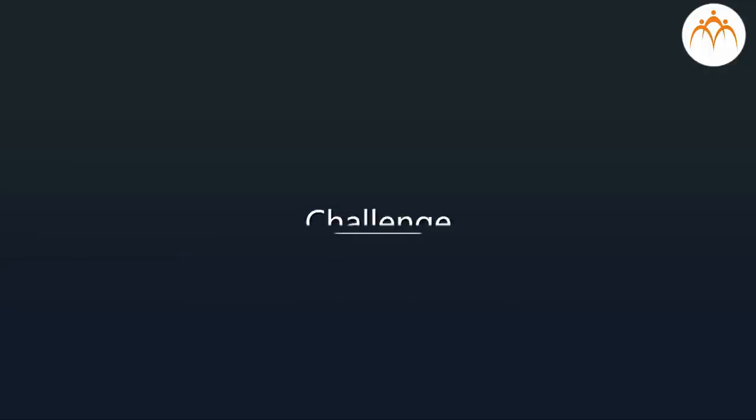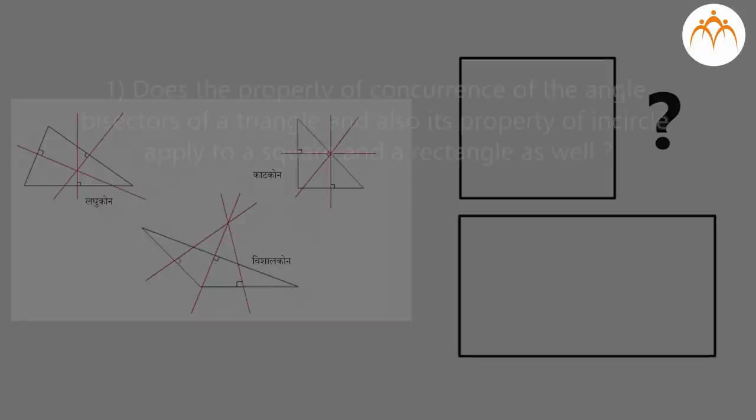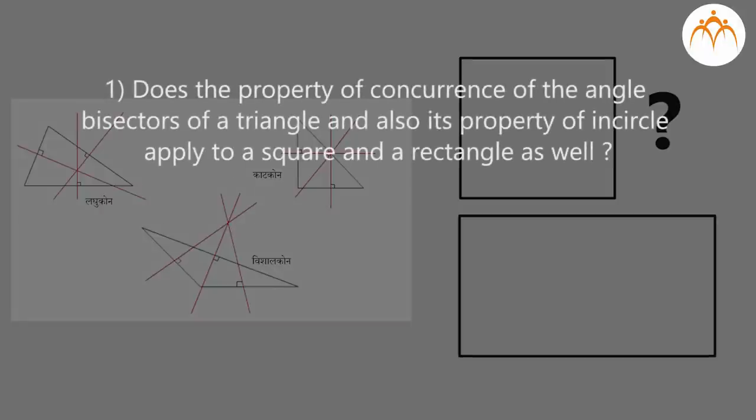Challenge: Does the property of concurrence of the angle bisectors of a triangle, and also the property of the incircle, apply to a square and a rectangle as well? Try to understand by drawing figures.